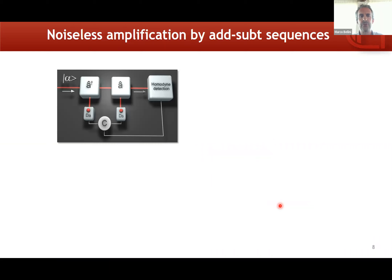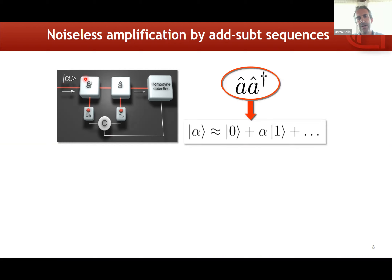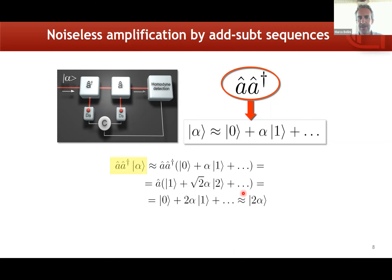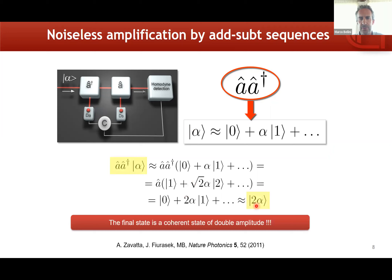Not only did we implement a† and a independently, but we've been using them in combinations — in sequences and coherent superpositions. For example, if you produce a sequence of photon creation followed by annihilation and apply this to a weak coherent state of light, the result is essentially another coherent state of double amplitude. This means that by simply implementing a sequence of photon creation and annihilation on a coherent state, you have performed a noiseless amplification of the state. Of course, this is non-deterministic, since deterministic noiseless amplification is forbidden by quantum mechanics, but it is an interesting and potentially useful result.